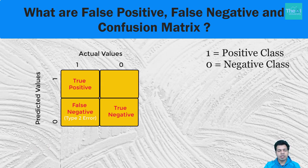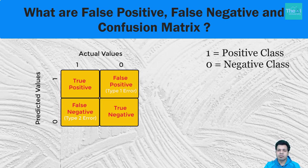One important thing to remember is that type 1 error is less dangerous than type 2 error, because if you say something is not going to happen but it actually happens and you are not prepared for it, then it is definitely more dangerous.